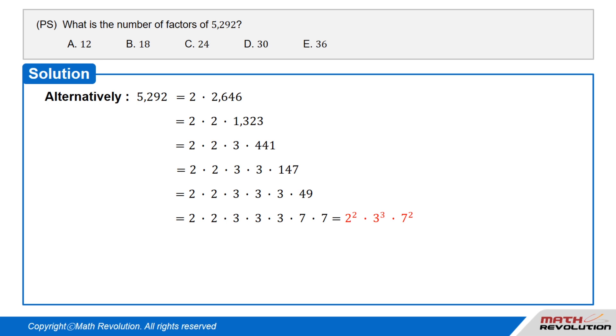This equals 2 times 2 times 3 times 3 times 147, which equals 2 times 2 times 3 times 3 times 3 times 49 equals 2 times 2 times 3 times 3 times 3 times 7 times 7 equals 2 squared times 3 cubed times 7 squared.